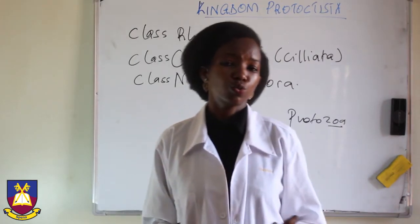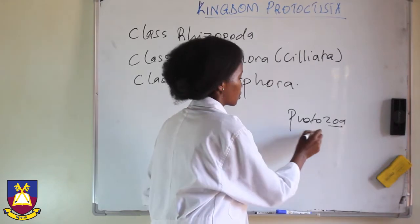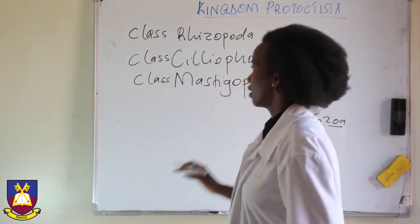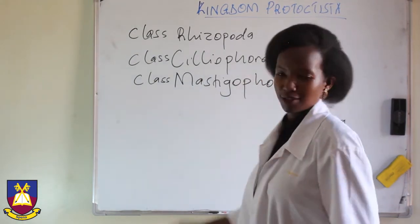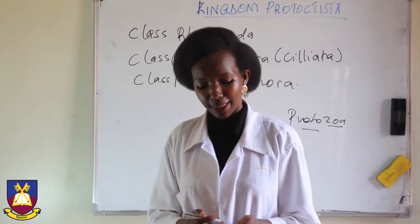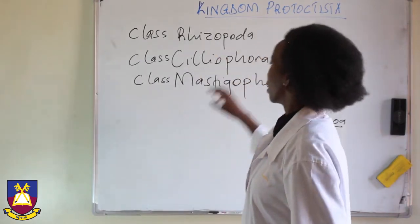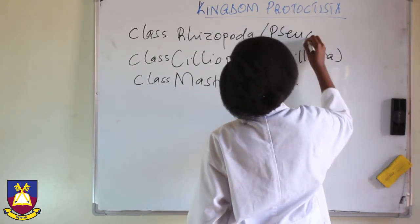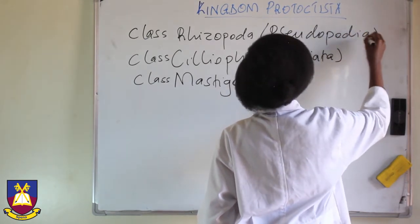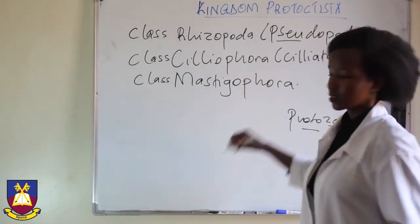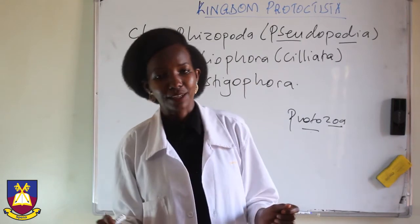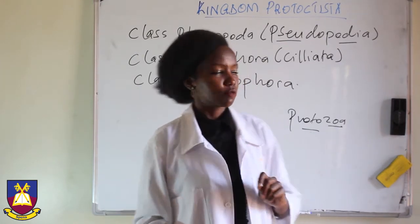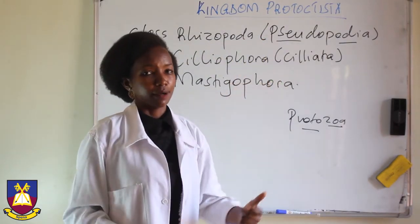Protozoa — 'zoa' for zoo — means the animal-like protoktists, the ones that have the characteristics of animals. Phylum Protozoa has three classes: Class Rhizopoda, Ciliophora, and Mastigophora. These classes are named according to the mode of movement of those organisms. Class Rhizopoda consists of organisms that move by what we call pseudopodia — pseudo meaning false, podia meaning feet, so false feet. An example of those is amoeba.